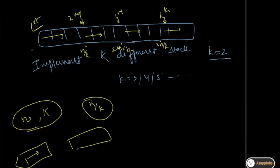When it was two stacks, you had to keep track of two indexes i and j. Now there are k stacks. You cannot store k different variables, so what you can do is store all the moving indexes of each stack in an array of size k.